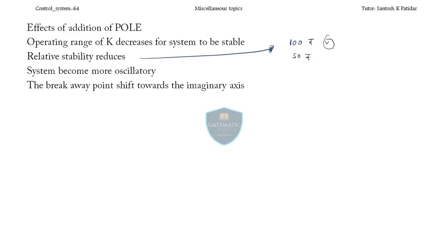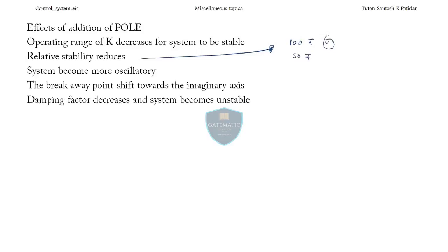All these points are looking like disadvantages. The pole is kind of a blunder — the operating range decreases, relative stability decreases, system becomes more oscillatory. The breakaway points shift towards the imaginary axis, which is the border line between stable and unstable system. If your poles are moving to the right-hand side, the system is going to be unstable. Addition of poles makes the system more unstable, and the damping factor decreases — that is why the system becomes more oscillatory.